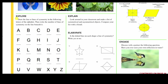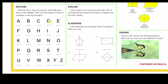It says here to draw the line or lines of symmetry in the following letters of the alphabet, then write the number of lines of symmetry on the line beneath. For example, looking at the letter E — I can't see a vertical line of symmetry, meaning I can't cut it into halves with a vertical line. However, I can see a horizontal line: if I go right through the center, I could fold this and have two equal parts. So I see one line there. Continue with all the other letters of the alphabet.